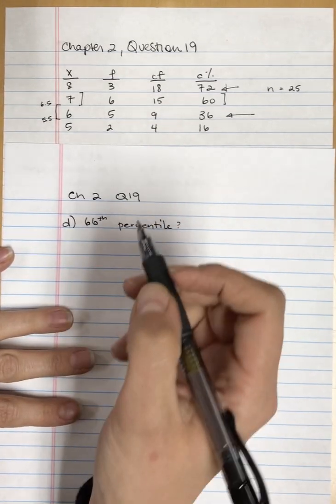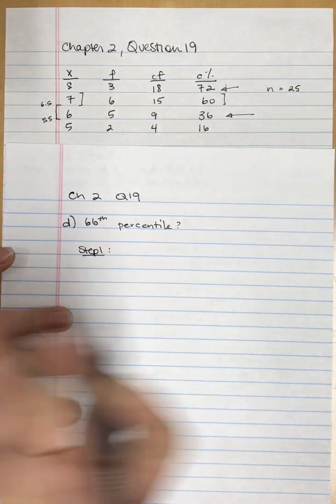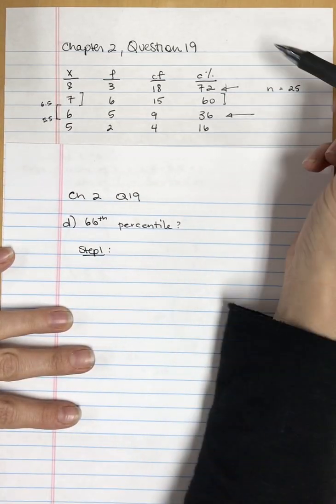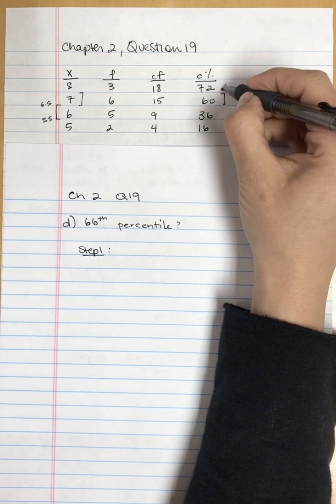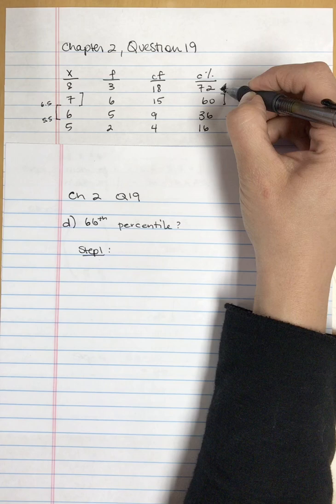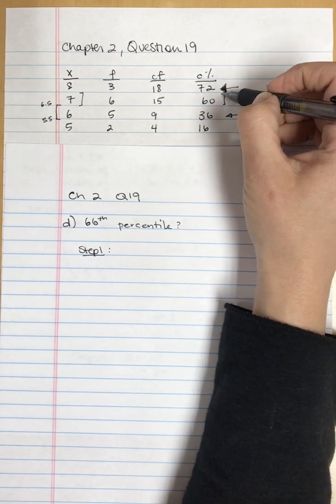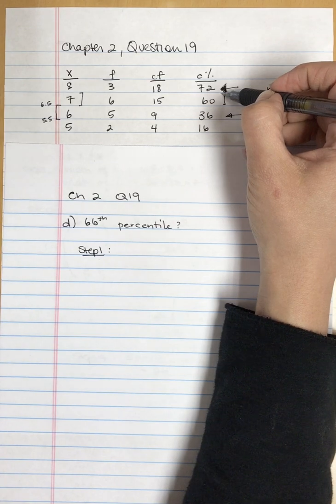The first step, step one, we have to find our interval widths. I know that the score has to be in this interval, because a score of 7.5 is associated with the 60th percentile, and 60 is less than 66.